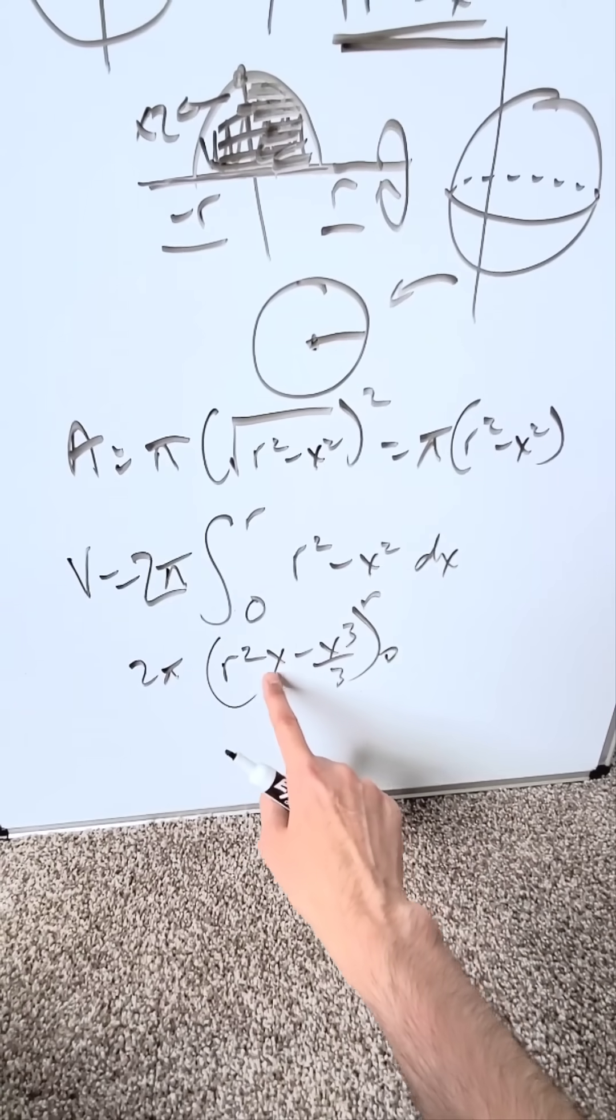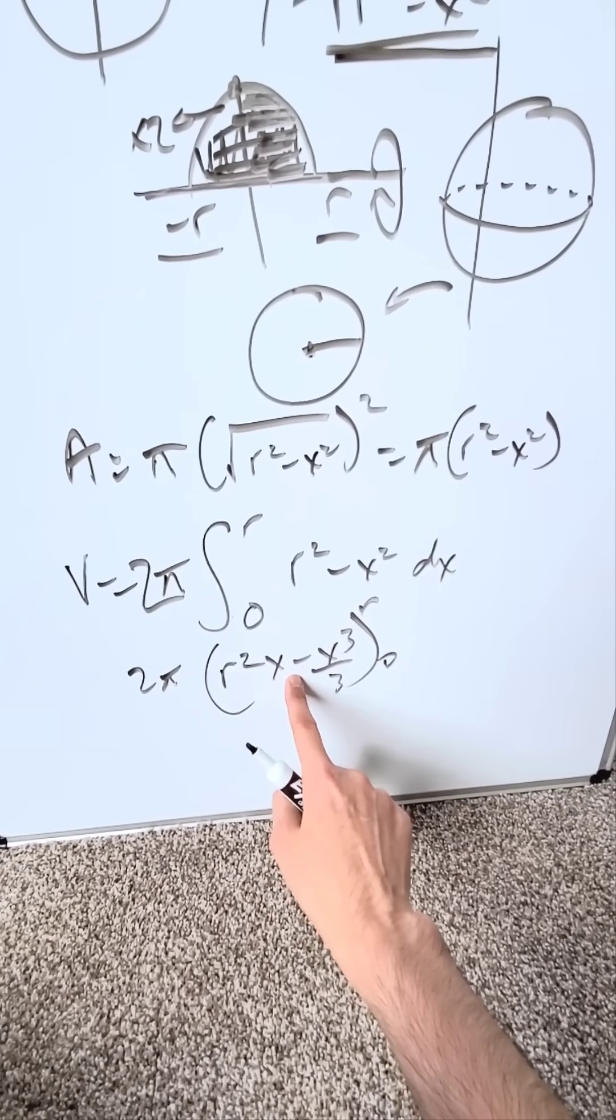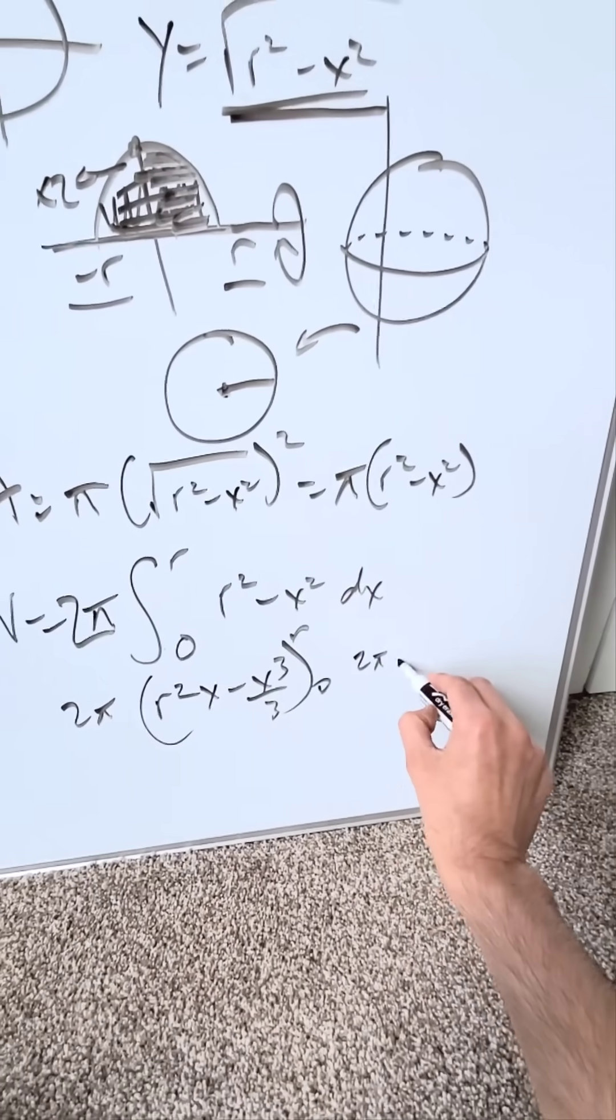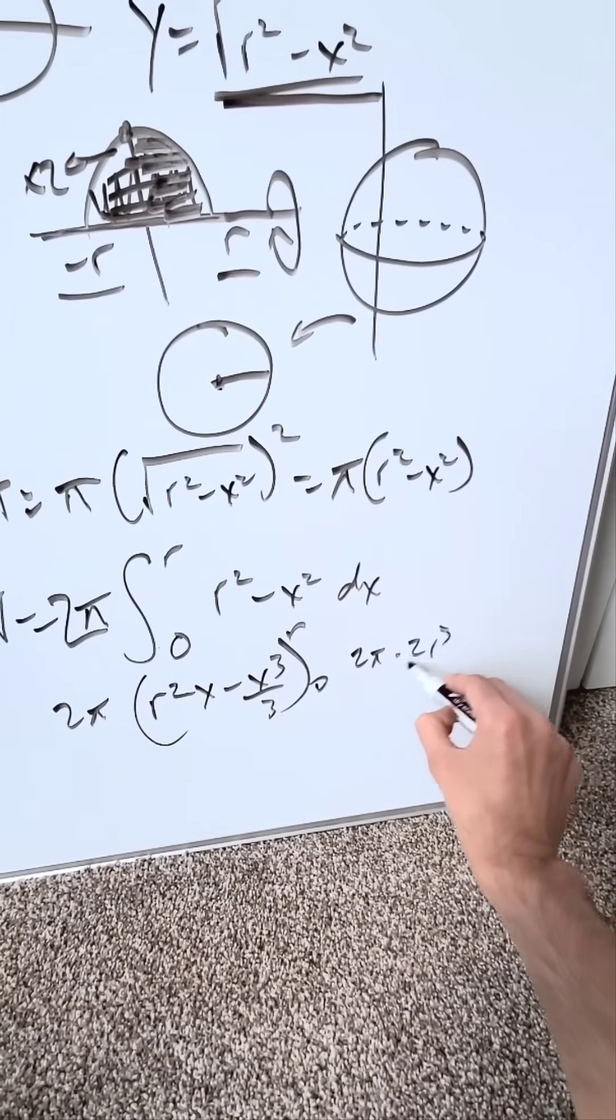You're putting r's in places of x. I'll have an r cubed minus an r cubed over three. That's like a whole minus a third and you know that's going to be two pi times two r cubed over three.